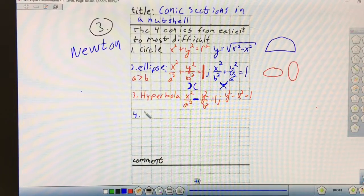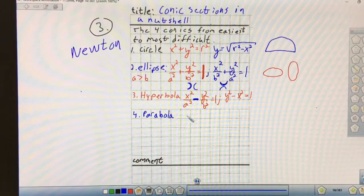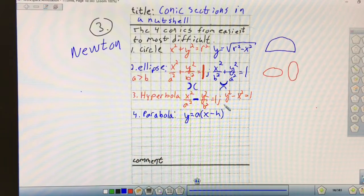The fourth most difficult one is the parabola. The high school equation for a parabola is the vertex form equation where A is the leading coefficient times (X minus H) squared plus K, where H,K is the vertex. That's called vertex form.